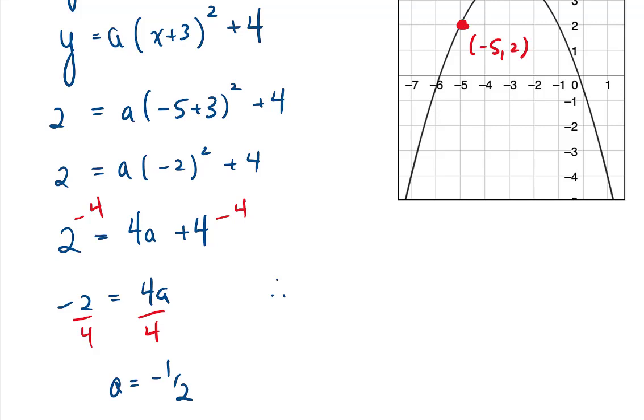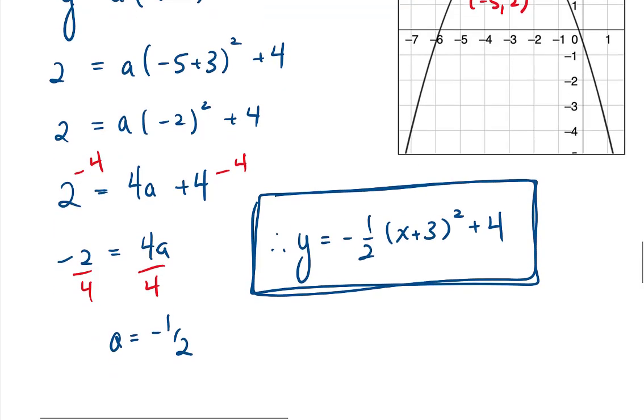So therefore, our quadratic relation in vertex form is y equals negative 1 half times x plus 3 squared plus 4. So there is a summary and review of unit 5.